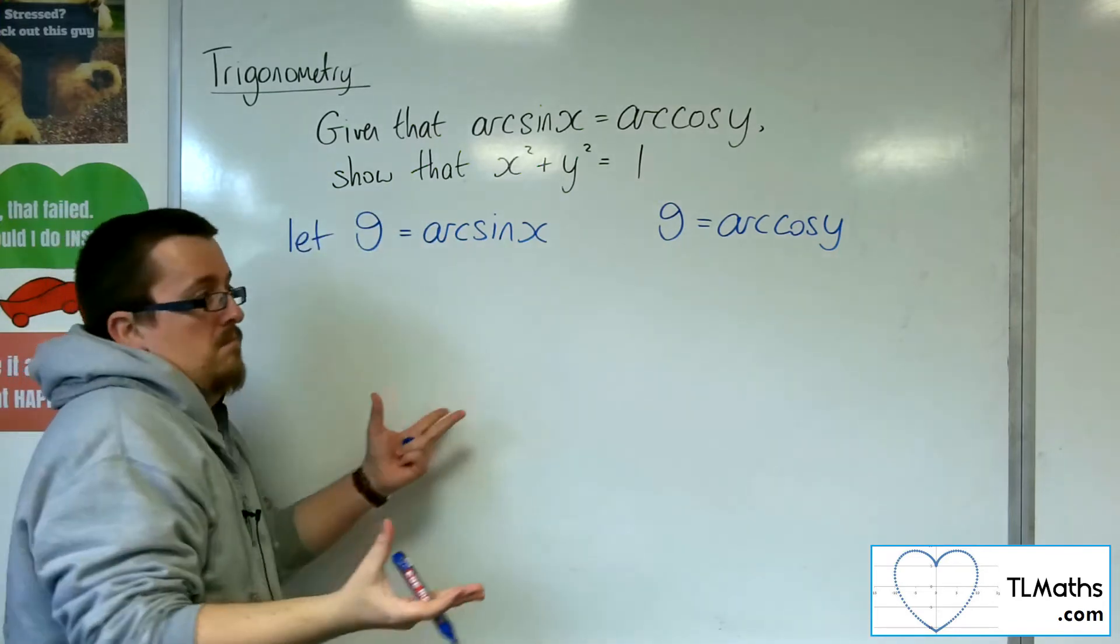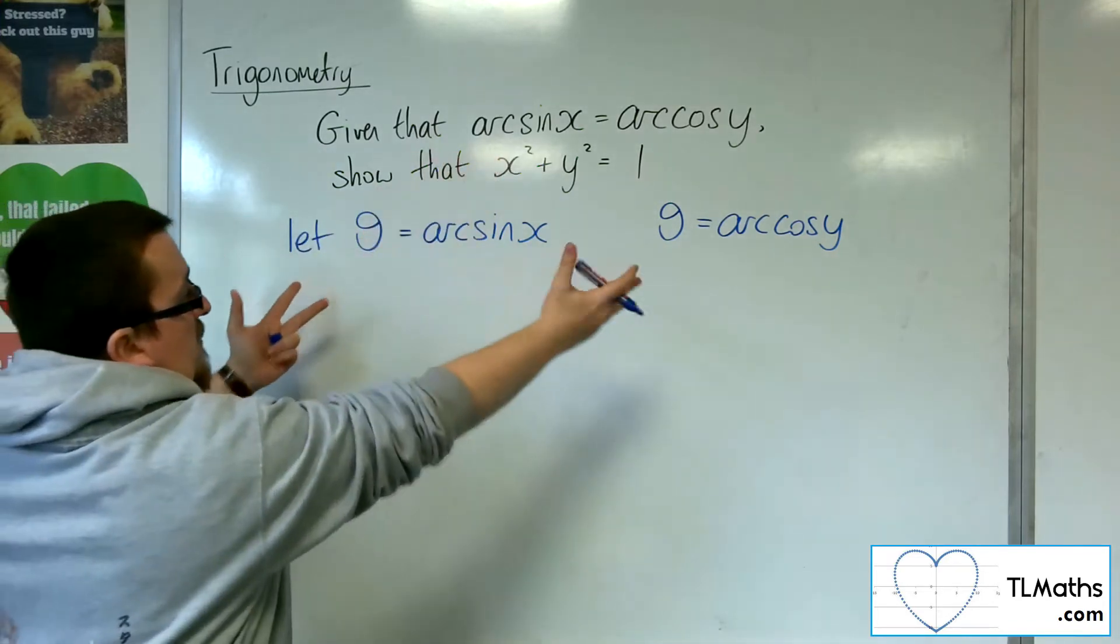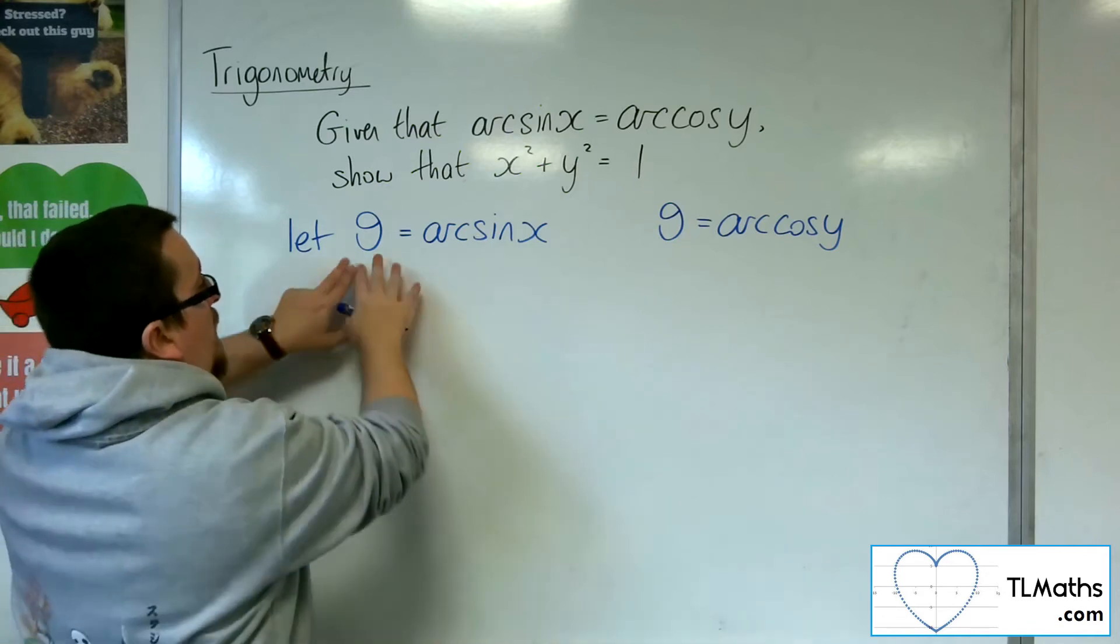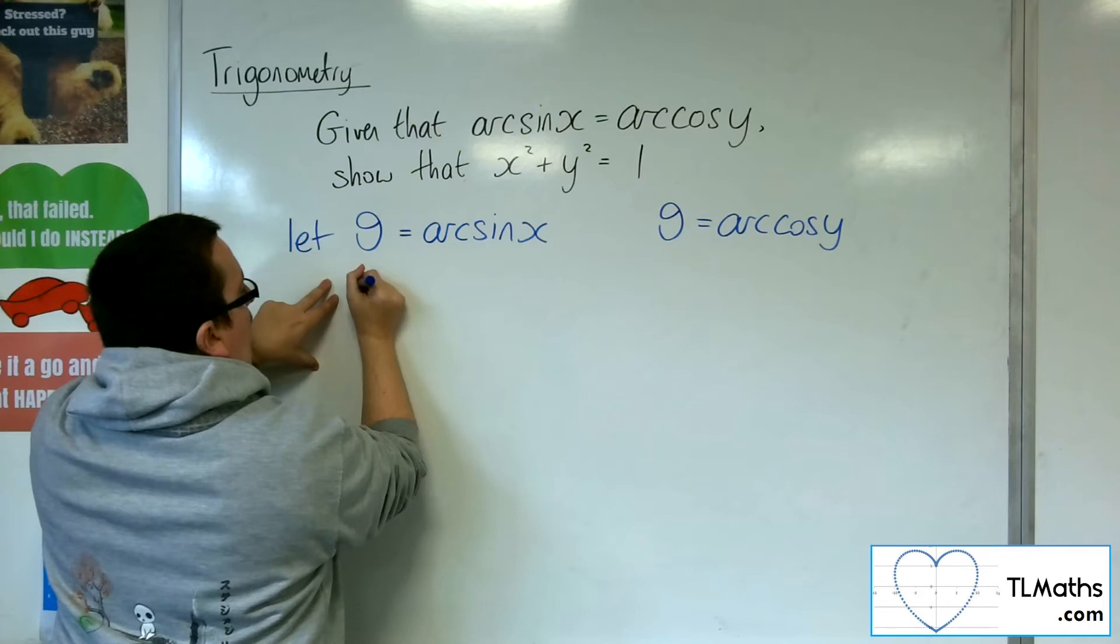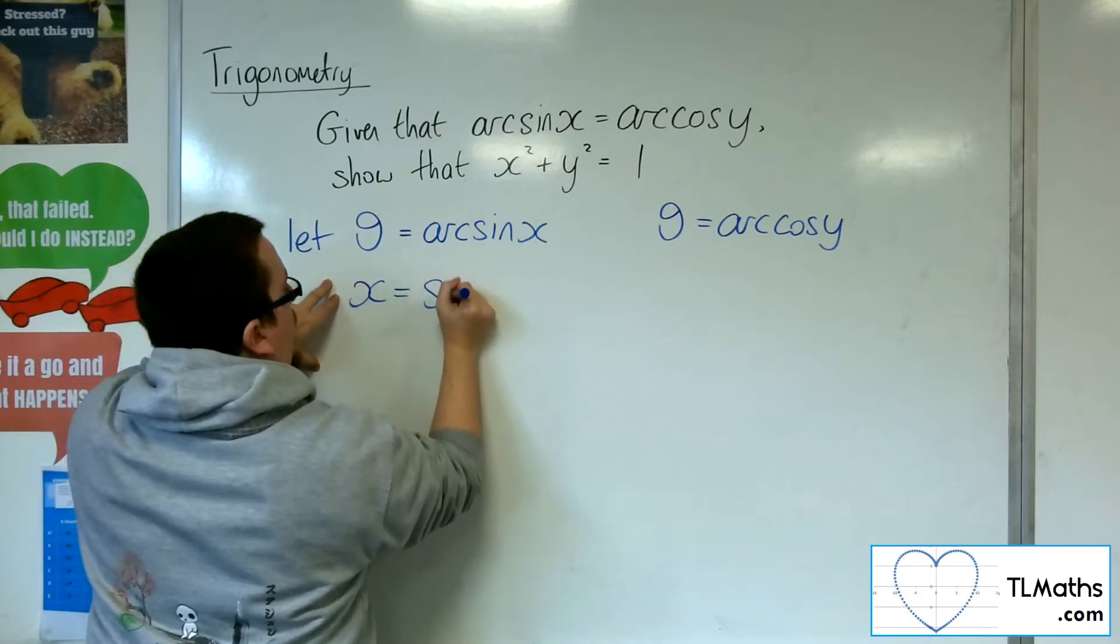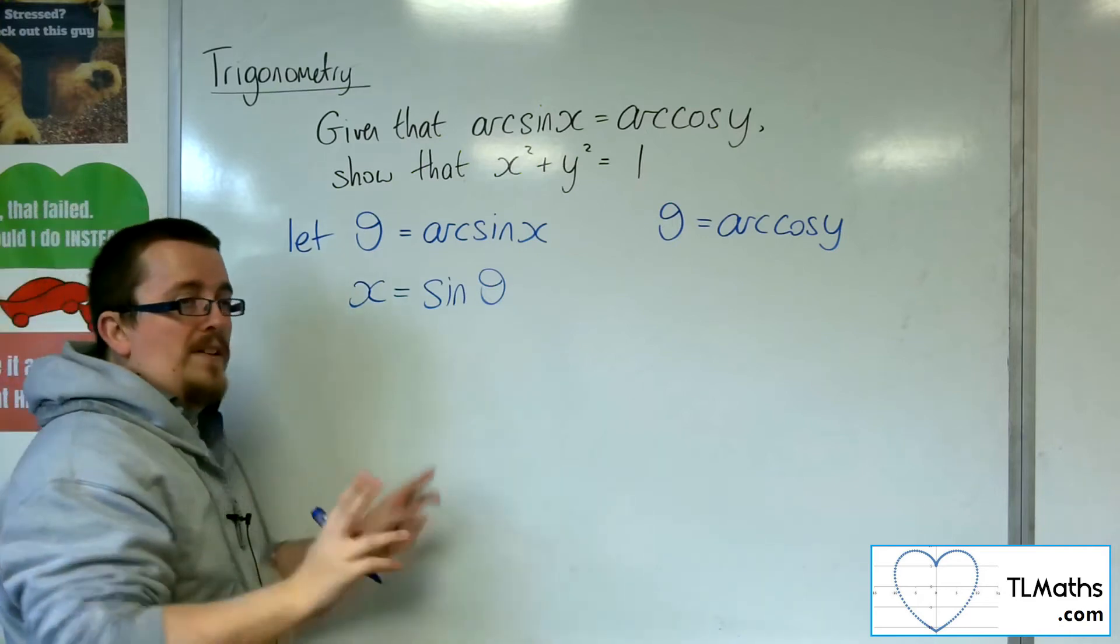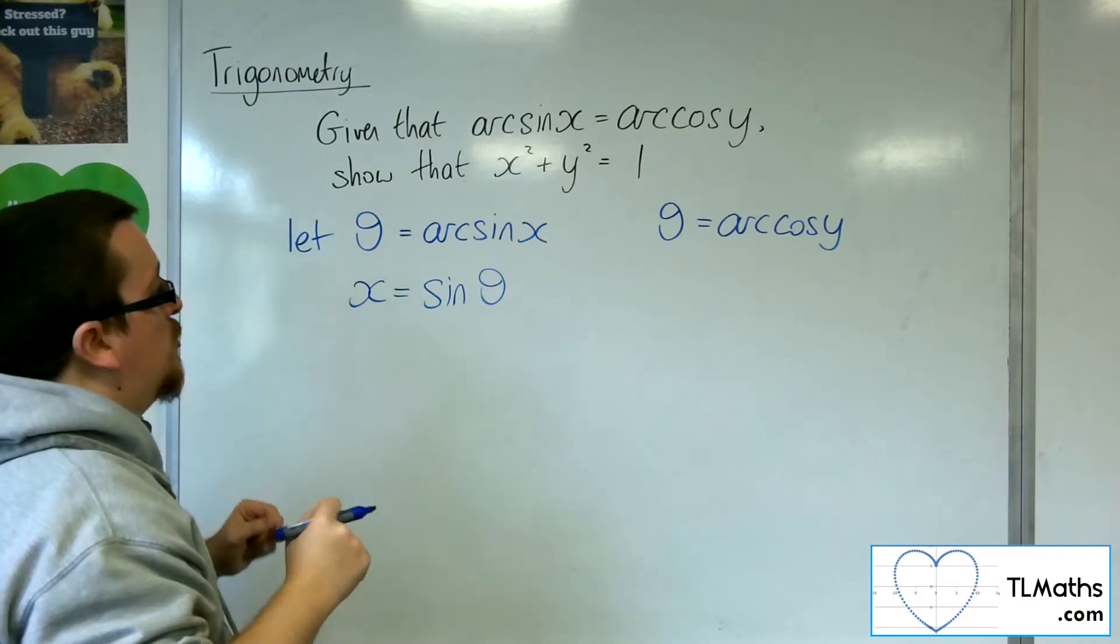But seeing as they're equal there, they have to be the same here. Now we can say, well, if θ equals arcsin x, then x equals sin θ. So that is effectively to sine both sides.